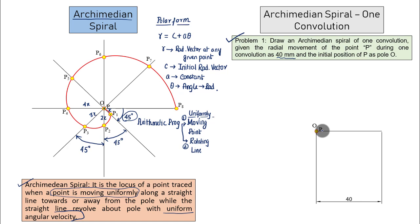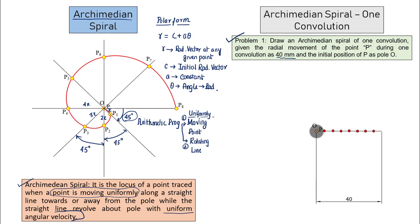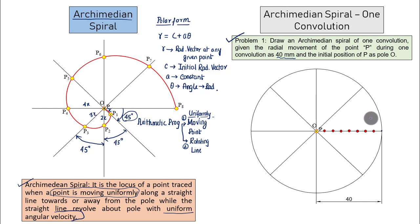This line has to be divided into eight equal parts — the reason will be understood shortly. Since 40 divided by 8 equals 5 millimeters, the divisions are simple. Keep the zero of your scale at the pole and place points at intervals of 5 millimeters. Then keep one leg of your compass at the pole and the pencil end on the outermost point to draw a circle, and then divide the circle into eight equal parts.